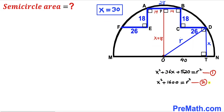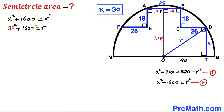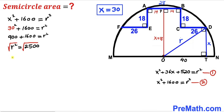Now focusing on equation 2, substituting x = 30: 30² + 1600 = r², which gives 900 + 1600 = r², so r² = 2500. Taking the square root of both sides, the radius r turns out to be 50 units.